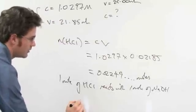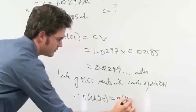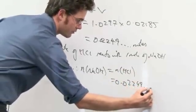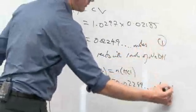Therefore, number of moles of sodium hydroxide equals number of moles of HCl, which equals 0.02249... moles. That's one mark there. One mark there.